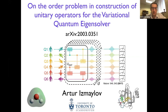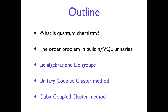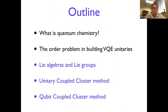The outline of my talk is the following. For the physicists in the audience, I will tell a little bit about what quantum chemistry is, or how chemists like to use the variational quantum eigen solver to solve chemistry problems. Then I will introduce the problem and our view of how Lie algebras and Lie groups can address it. I'll also illustrate how this Lie algebra–Lie group connection can be used in two typical methods — unitary coupled cluster and qubit coupled cluster — for solving quantum chemistry problems on quantum computers.